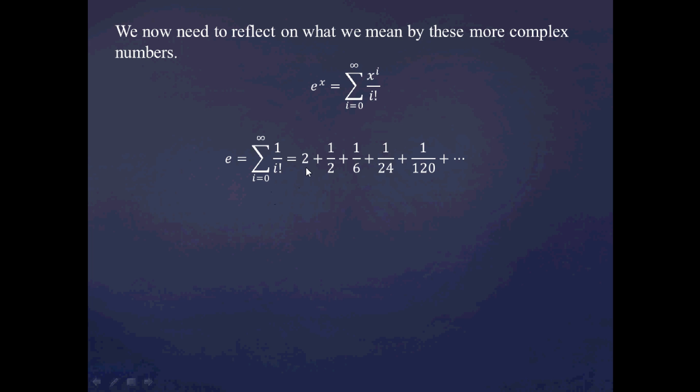where it's 1 plus 1, so that's going to be 2, plus 1 over 2 factorial, or 1 half, plus 1 over 3 factorial, or 1 sixth, and so on. And this series converges quite nicely to e.